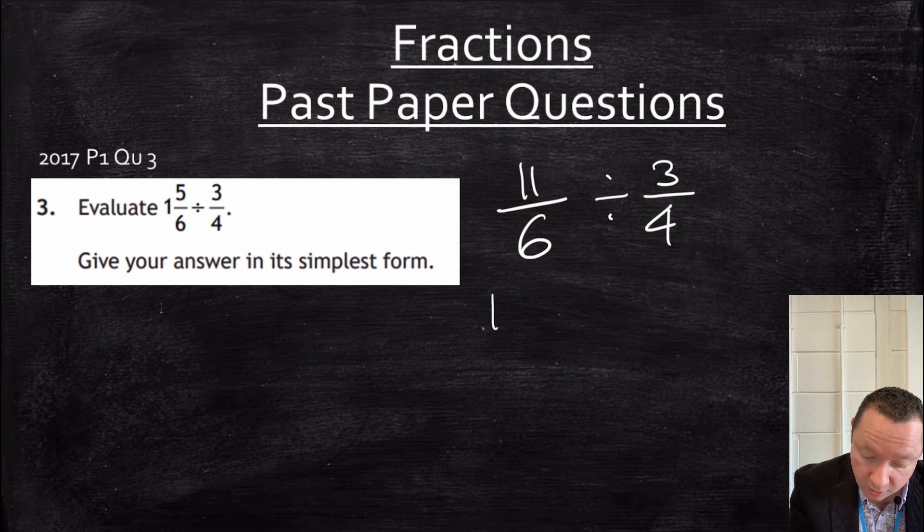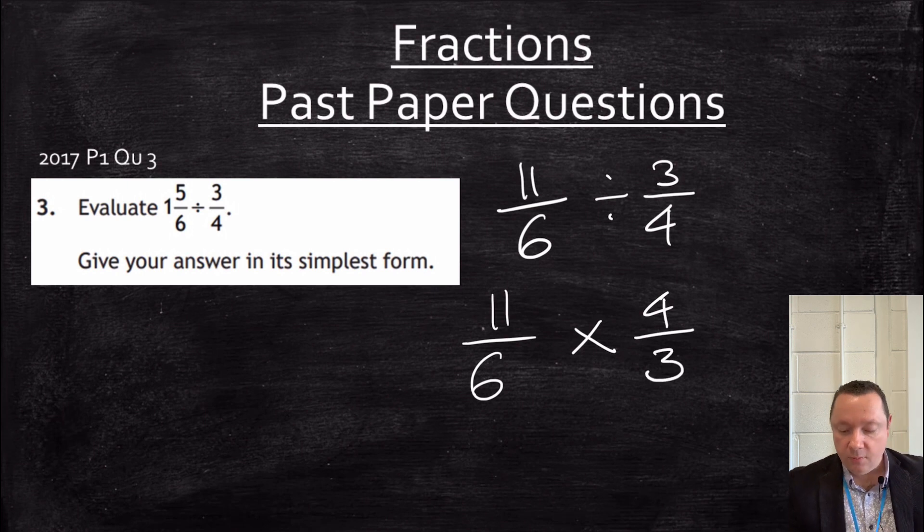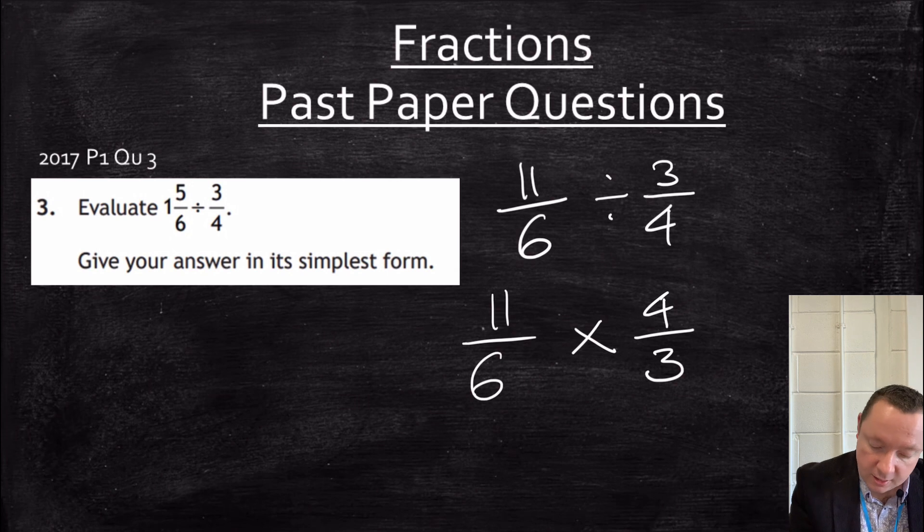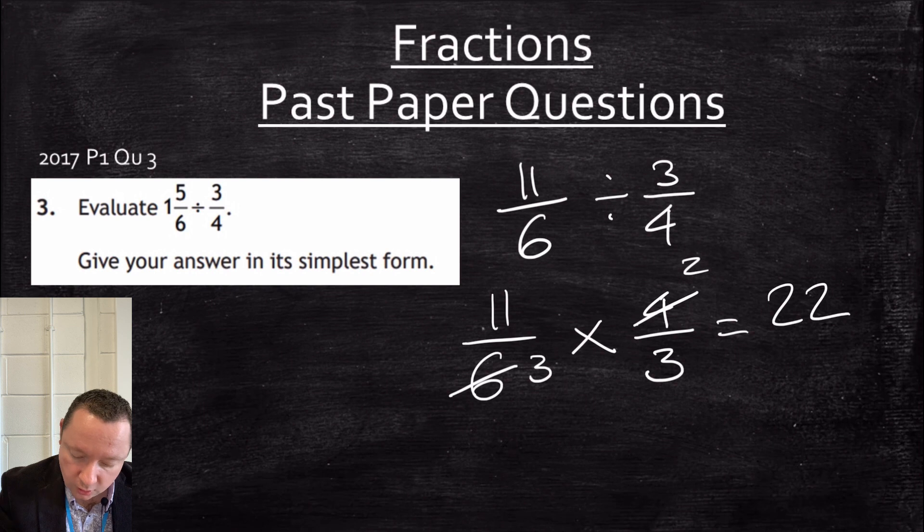So that becomes 11 over six. Dividing by a fraction is the same as times by its reciprocal. So flip the second one upside down, four thirds. We can now simplify in advance or at the end. So I can divide this one by two to get two, this one by two to get three, and then our final answer becomes 11 times two is 22, three times three is nine.